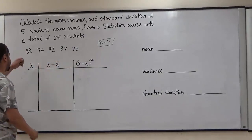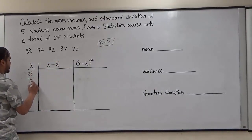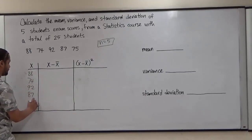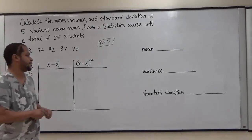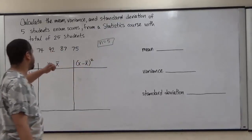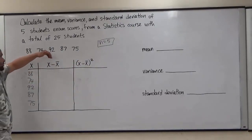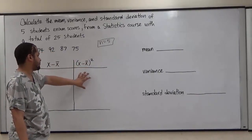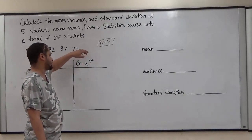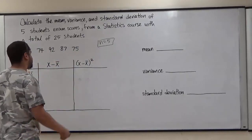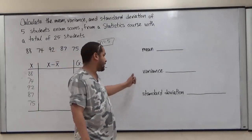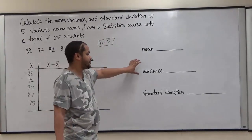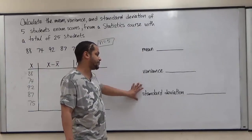Our five scores are going to be 88, 74, 92, 87, and 75. To begin, we first have to calculate the mean. We need the mean so we can subtract it from each sample to generate the next column — sample minus the mean squared — which is important for getting the variance and the standard deviation. Being that these are based on a sample, this is going to be the sample mean, the sample variance, and the sample standard deviation.